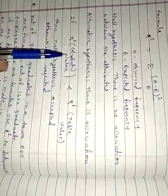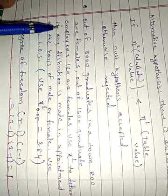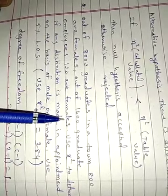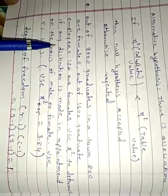Let us take one problem. Out of 8000 graduates in a town, 800 are female. Out of 1600 graduate employees, 120 are female. Use Chi-square distribution to determine if any distinction is made in appointment on the basis of male or female, using a 5% level of significance. The Chi-square table value at 5% level of significance is 3.84.